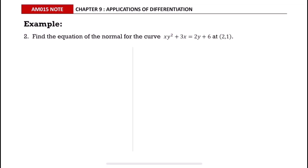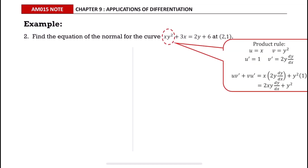In this question we want to find the equation of normal at the point (2, 1). First, find the gradient of tangent by differentiating the equation implicitly. We differentiate the first term xy squared using the product rule, then differentiate positive 3x to get positive 3.